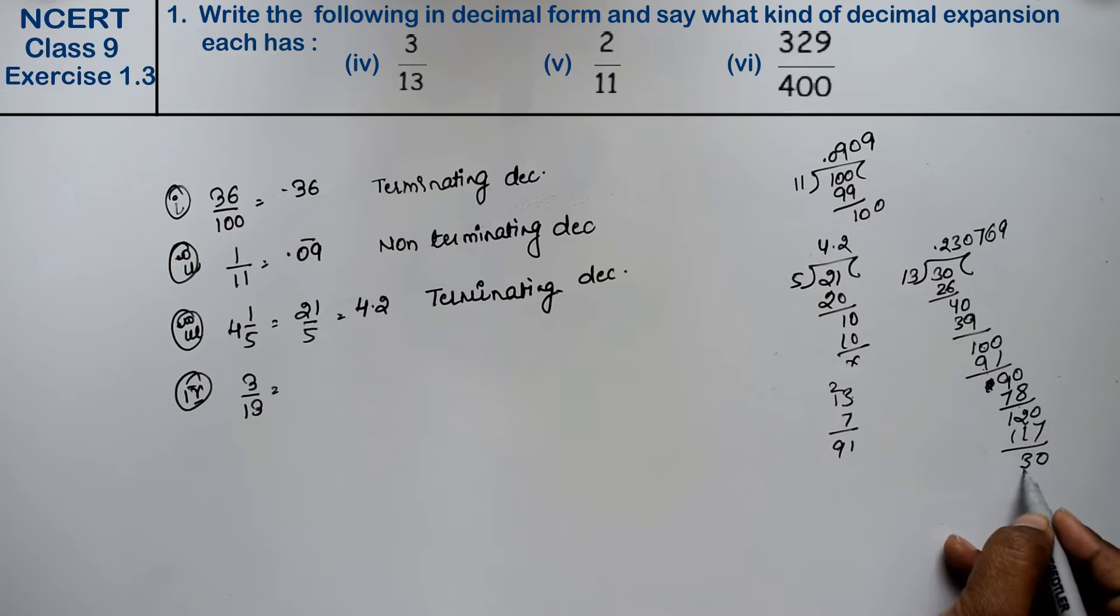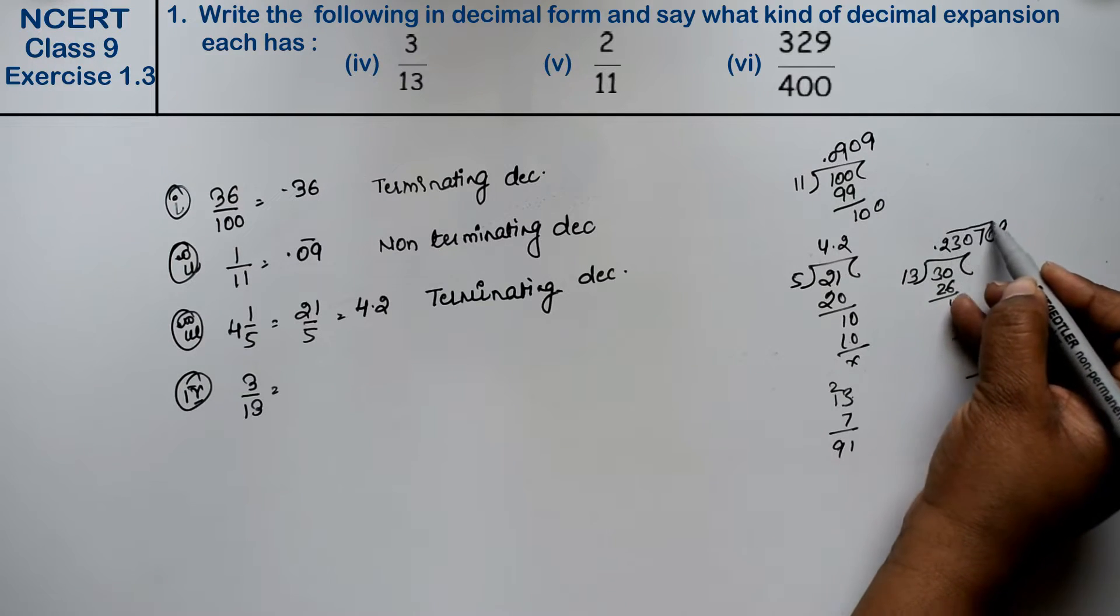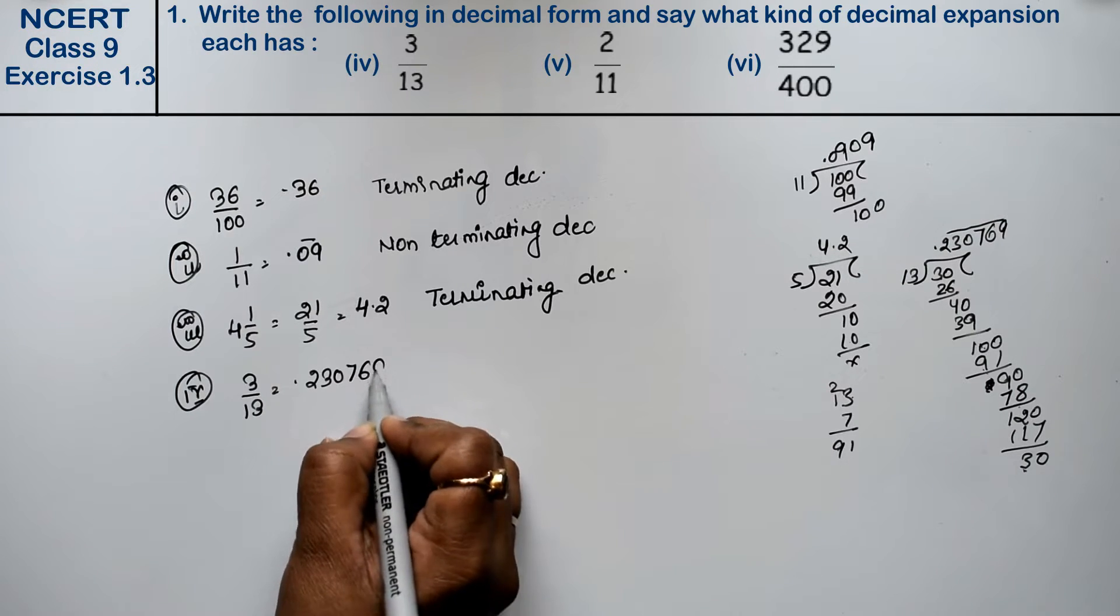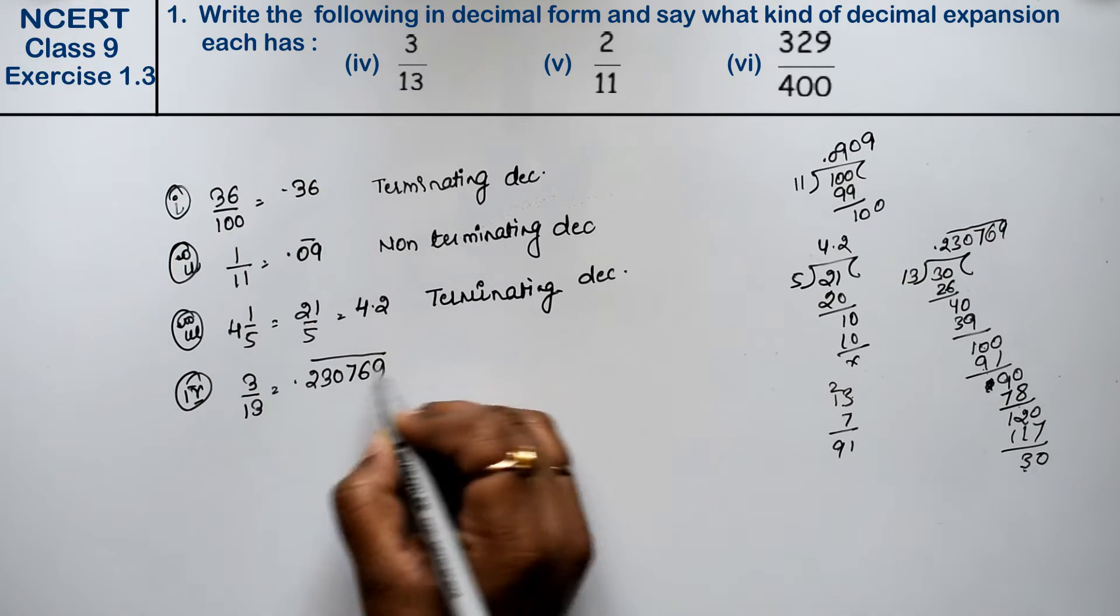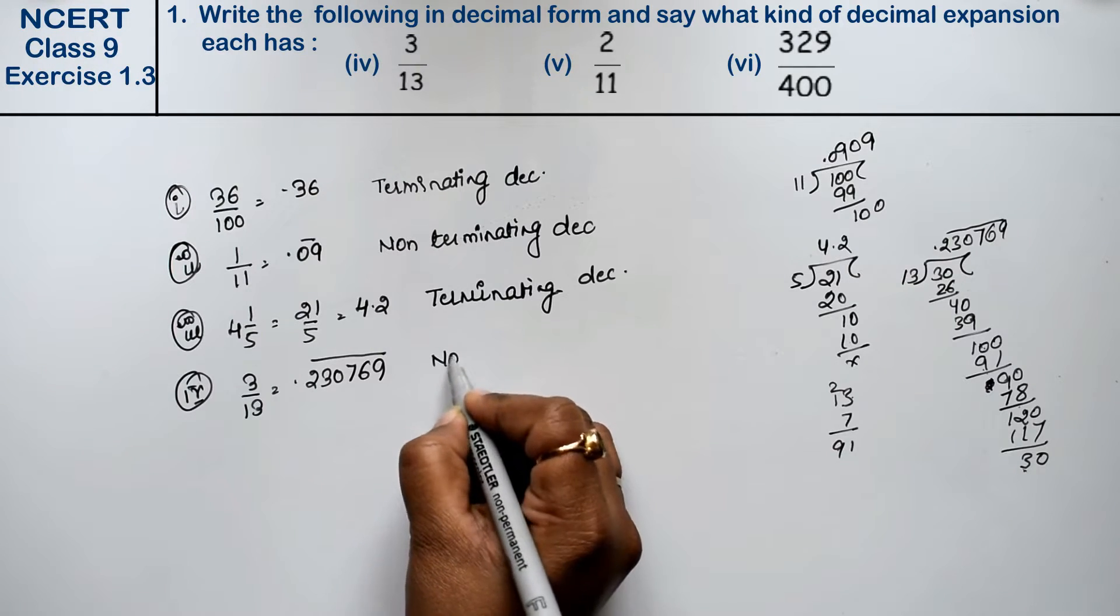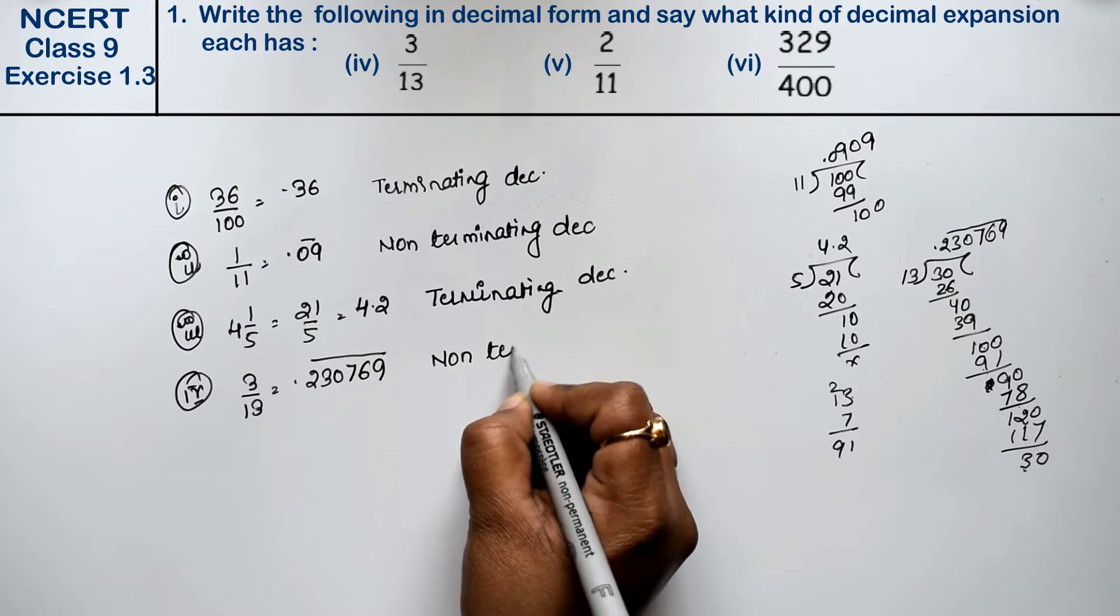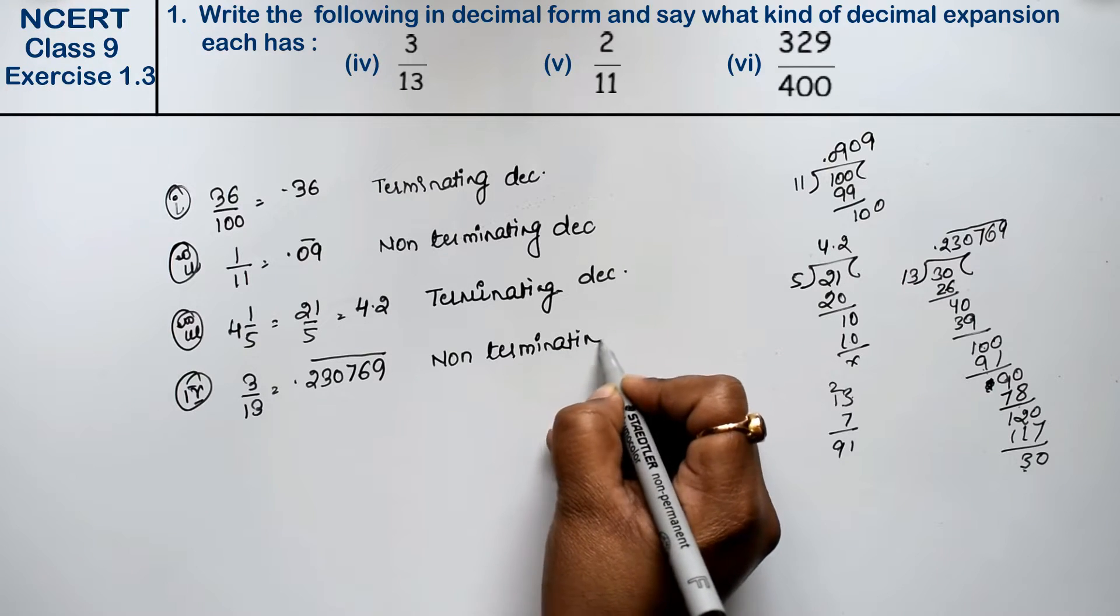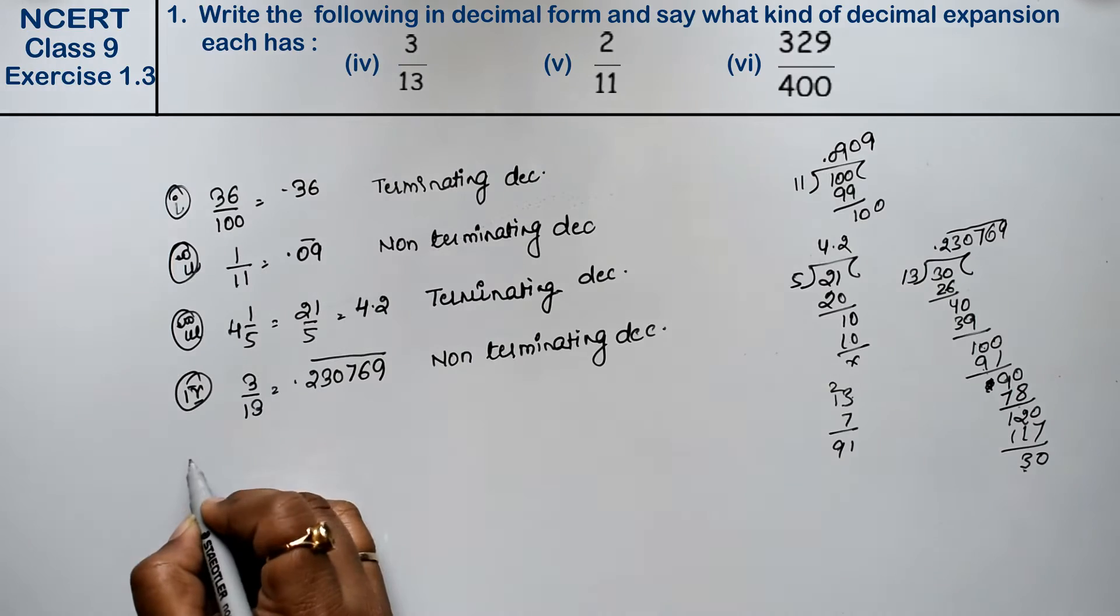Now here the pattern will repeat, so the answer is point 230769 bar. So what are the repeated values? Non-terminating decimals. Right friends?